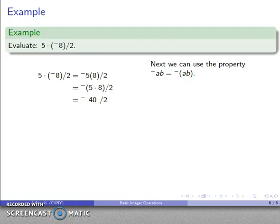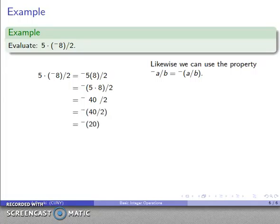For the quotient -40/2, I can write this as -(40/2). Do the division first: 40/2 = 20, giving us -20.